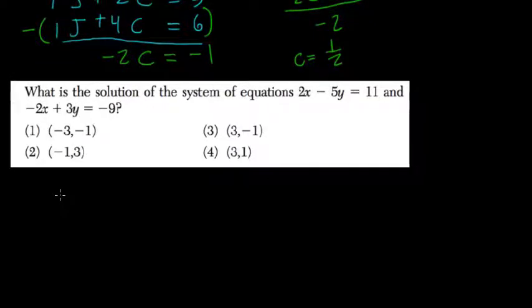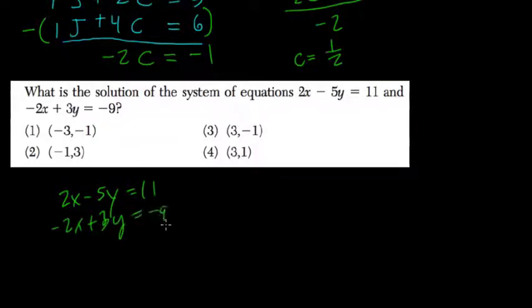What is the solution to the system 2X minus 5Y equals 11 and negative 2X plus 3Y equals negative 9?